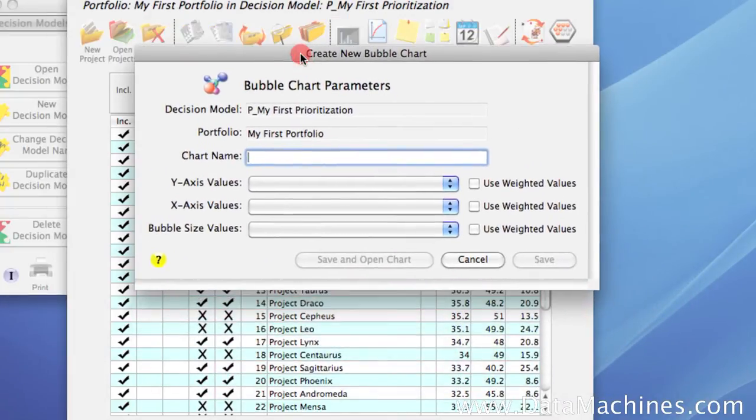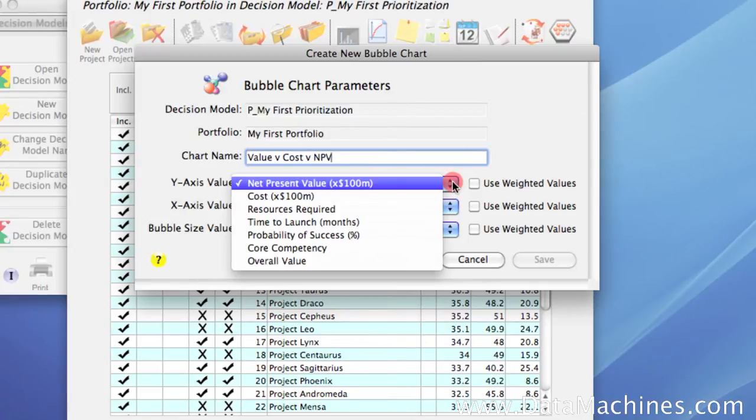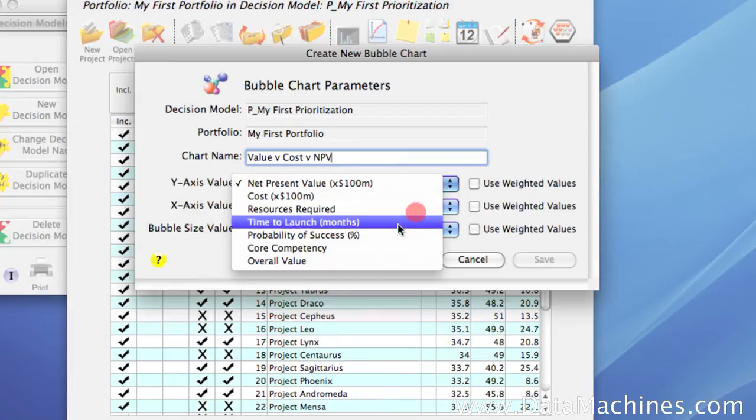The bubble chart form is all menu-driven. The first thing we're going to do is name the chart Value vCost vNPV. Next, we're going to select our values using the drop-down menus. For our y-axis, we're going to select Overall Value.